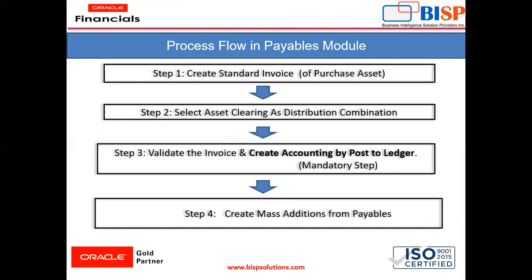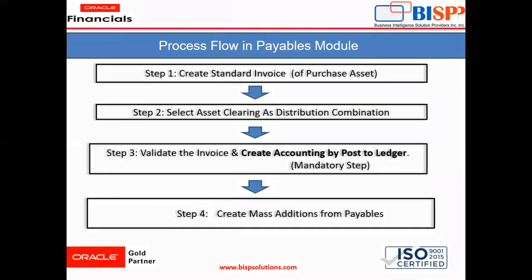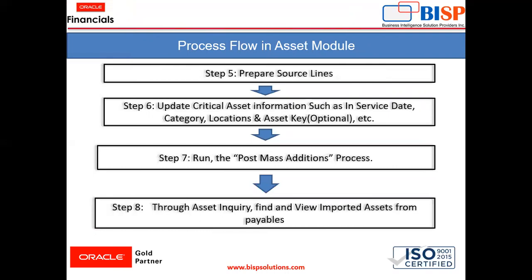First, you have to create a standard invoice in accounts payable. You have to keep one thing in mind: you have to select the asset clearing as the distribution combination. You have to validate that invoice and create accounting by posting to ledger — this is a mandatory step. Step four is create mass addition from payables. Then you have to prepare source lines and give the details of the asset. Then run the post mass addition process. After performing these seven steps, you have to inquire about the asset from the asset inquiry workbench to verify whether your asset has been transferred from payables to asset.